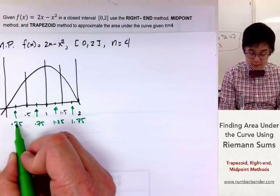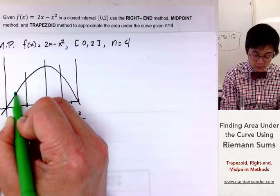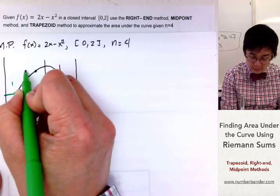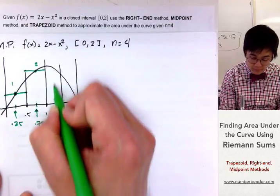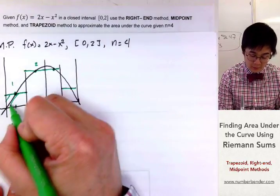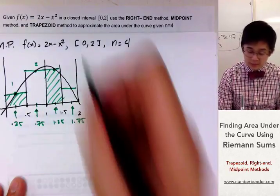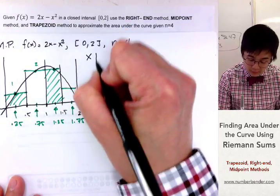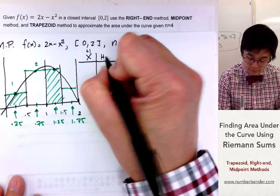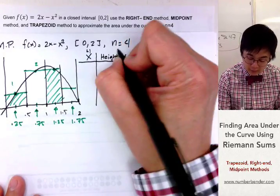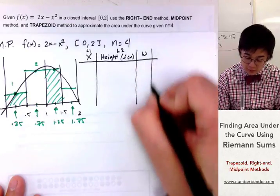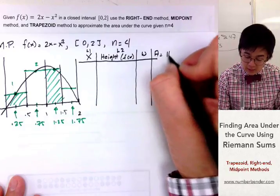Since we're using the midpoint of each rectangle, we produce four rectangles. Now let's set up our table. The x value will be our List 1, the height or f(x) is List 2. The width is a consistent 0.5, and the area is height times width.